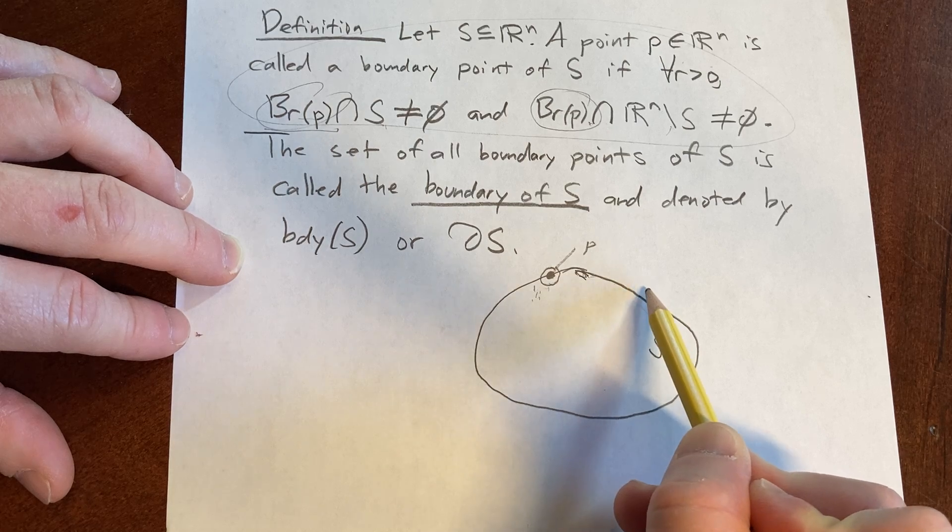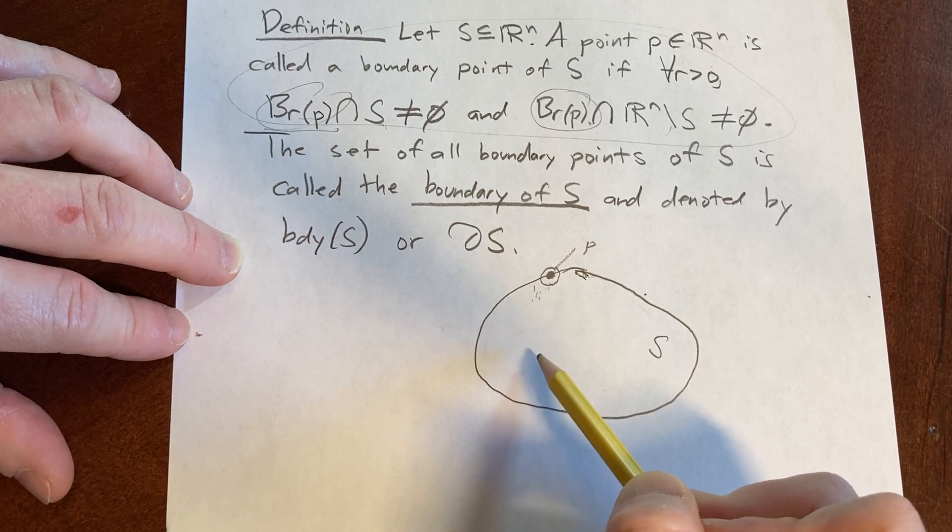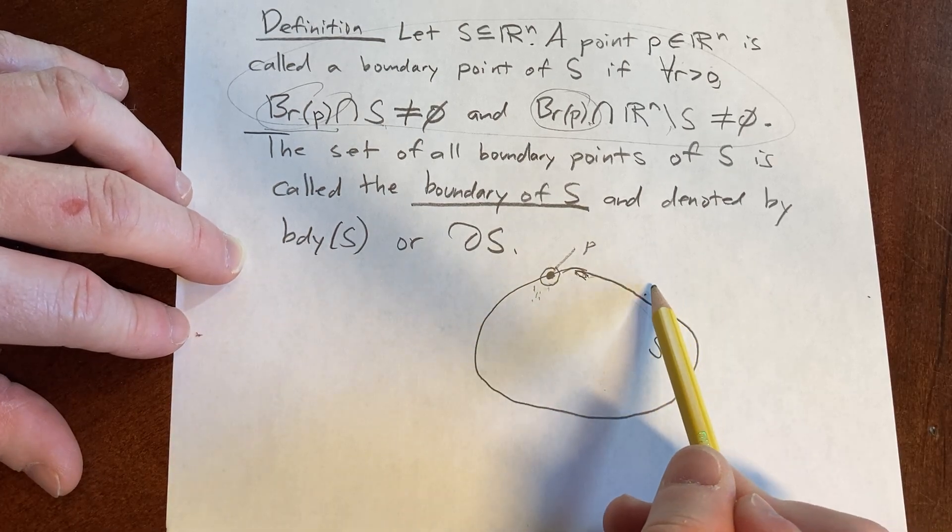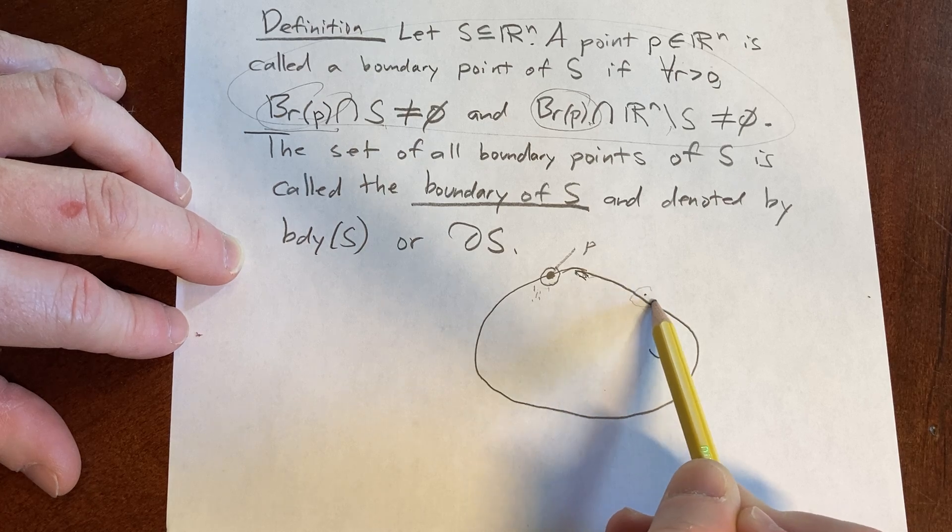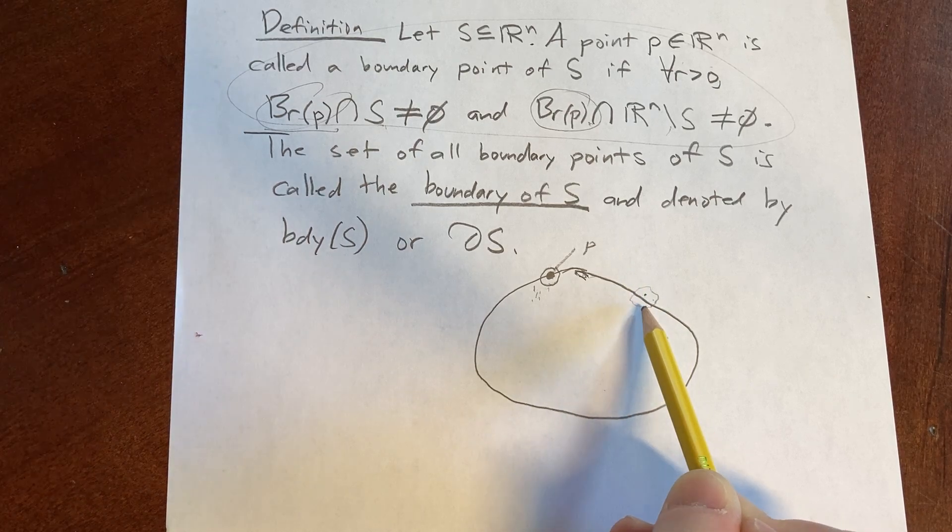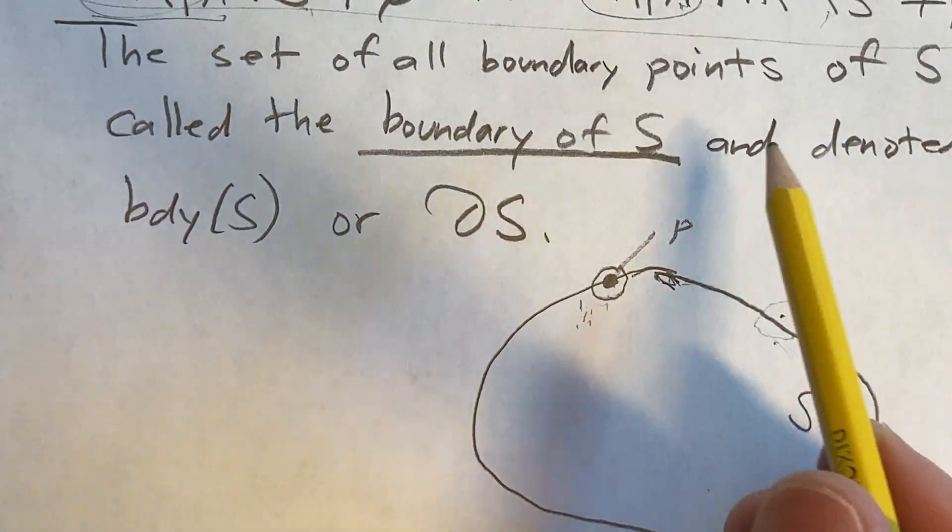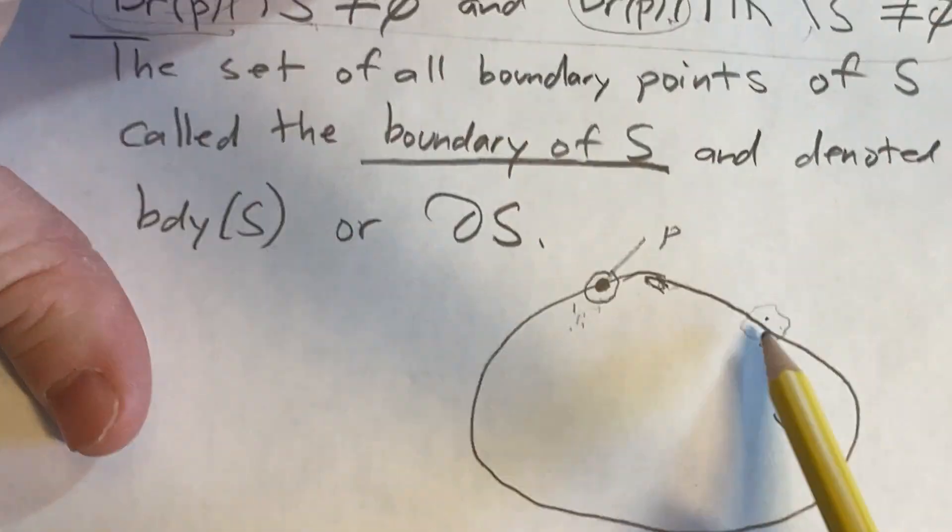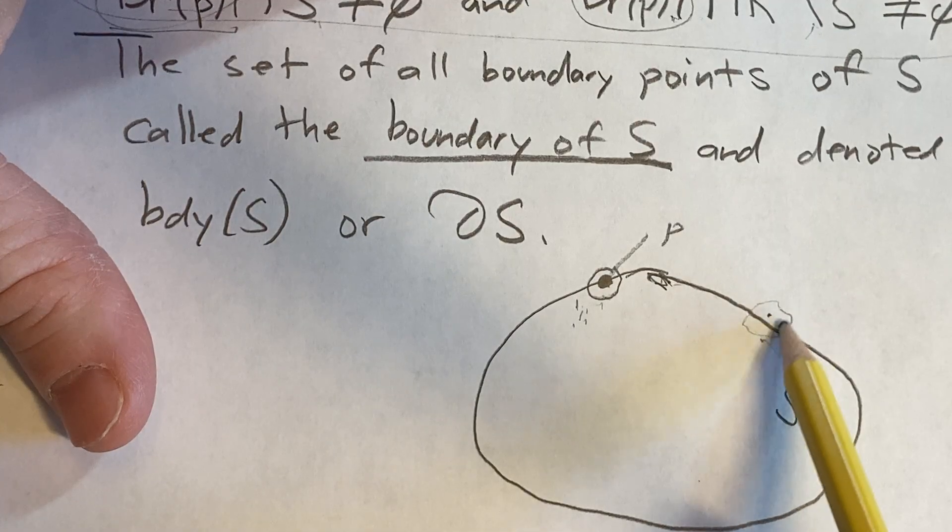Say I pick a point here. That's not going to be a boundary point. Because sure, I can find that open ball, and there's points in both places. There's points outside of S and points inside of S. I can make an open ball so that there's points inside of S and points outside of S.